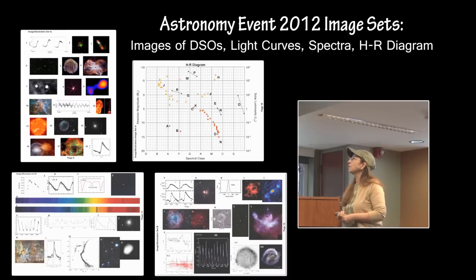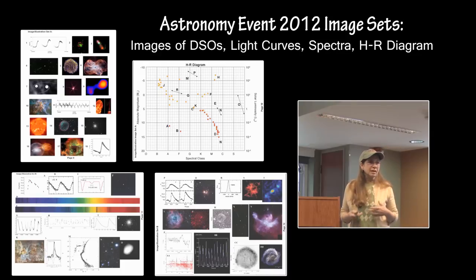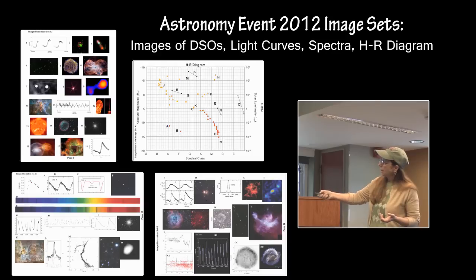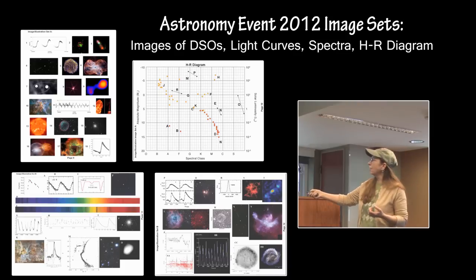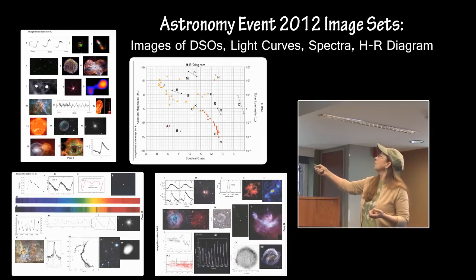Here is the image set from this year's event, 2012 event in Orlando, and you can see that there are several images of deep sky objects, there are spectral images here, this is an HR diagram one, here is a timing one from a pulsar, and there is an HR diagram with locations indicated on it.